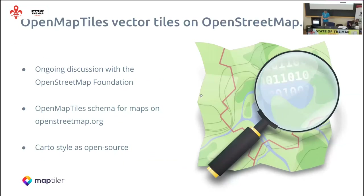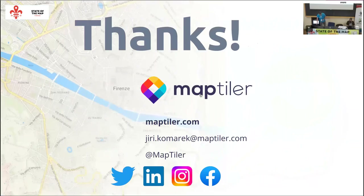Right now we have an ongoing discussion with the OpenStreetMap Foundation about adding vector tiles to the OpenStreetMap.org website. What we propose is using the OpenStreetMap schema for this. We are also providing the Carto style as open source — it will soon be released on GitHub, available for everybody. Thank you.